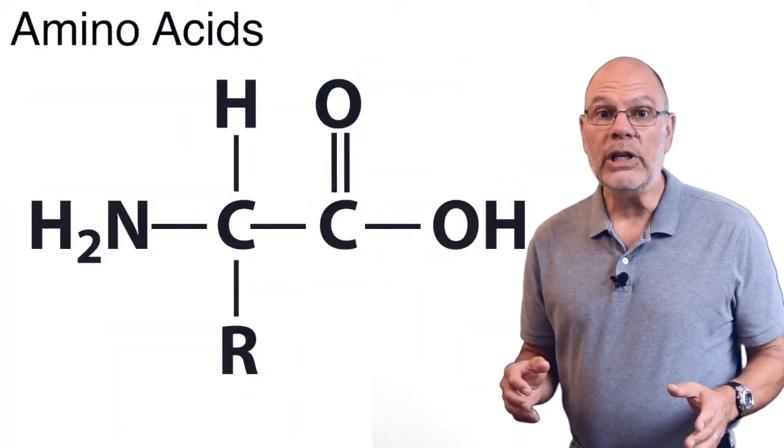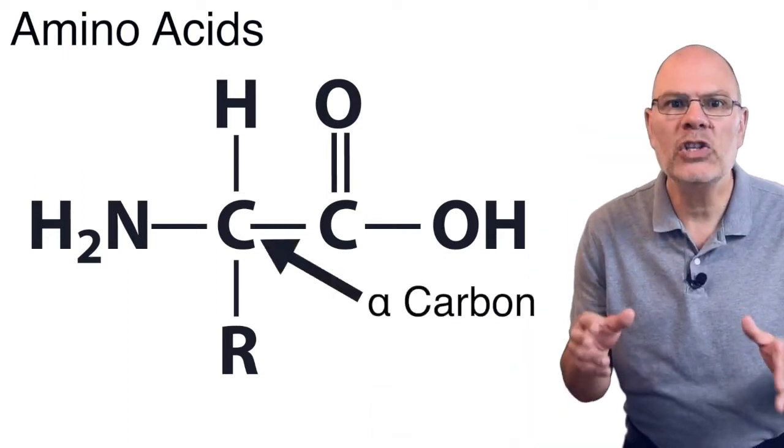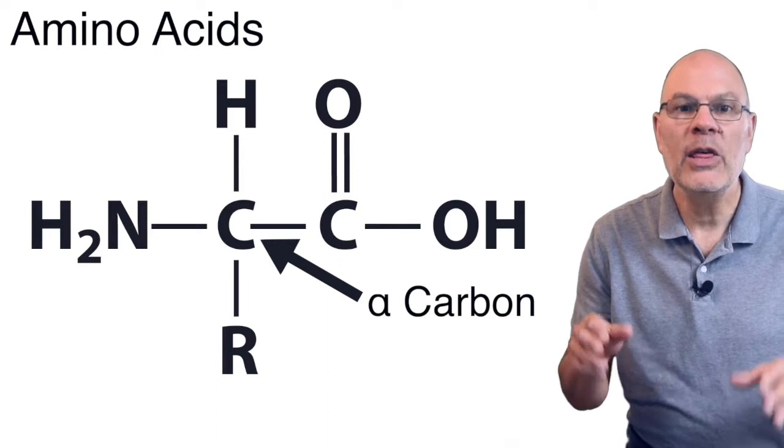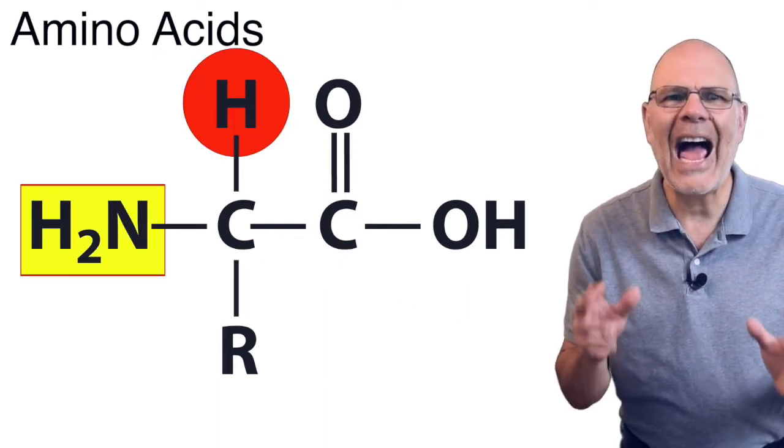The monomers of proteins are amino acids. Each amino acid has a central carbon, sometimes called an alpha carbon. This central carbon is attached to an amino functional group, a hydrogen atom,